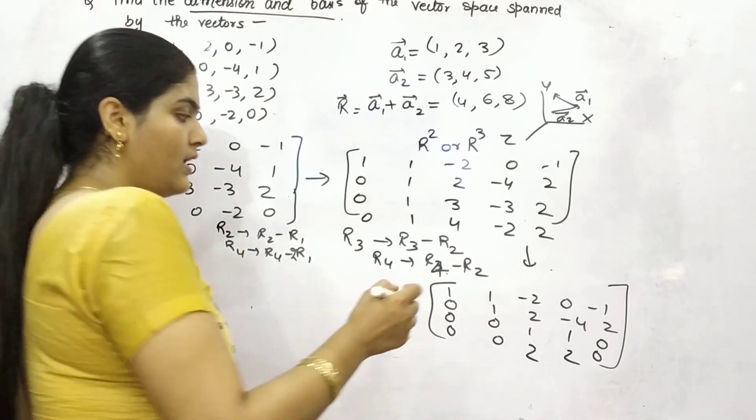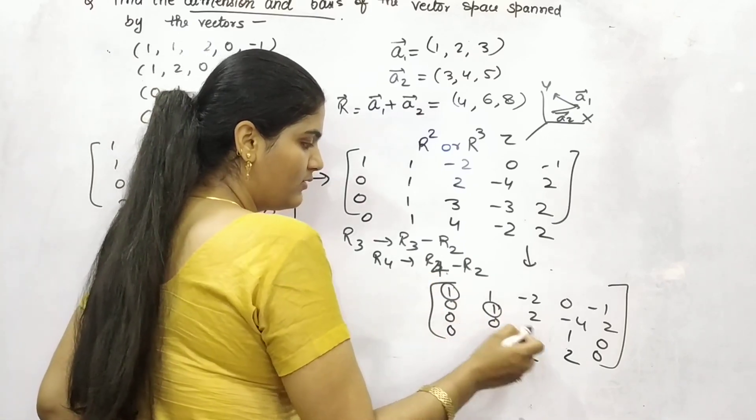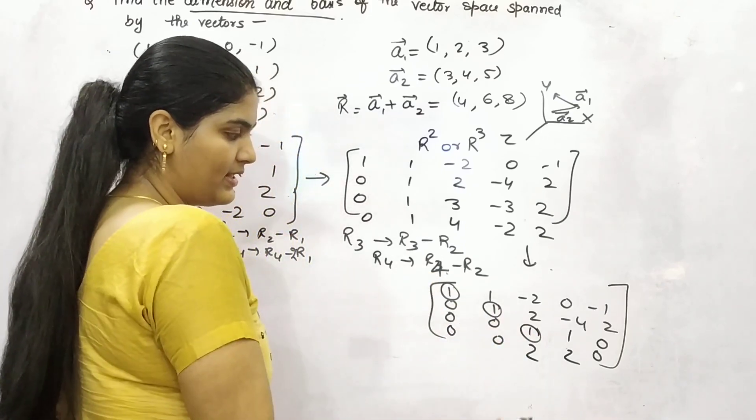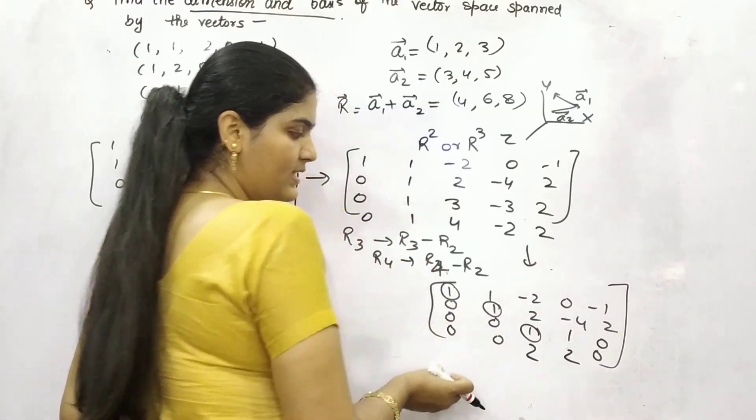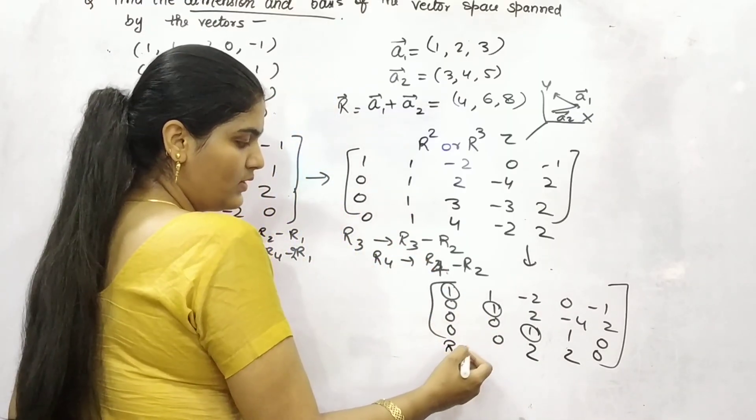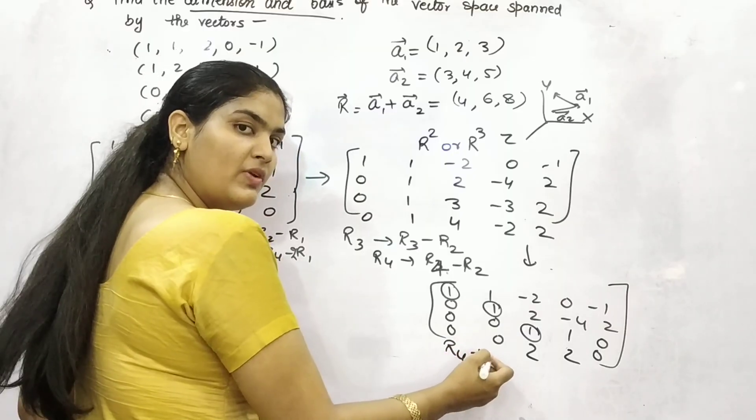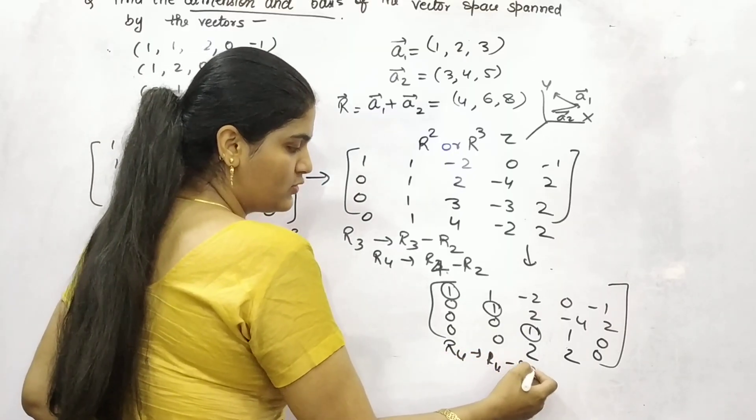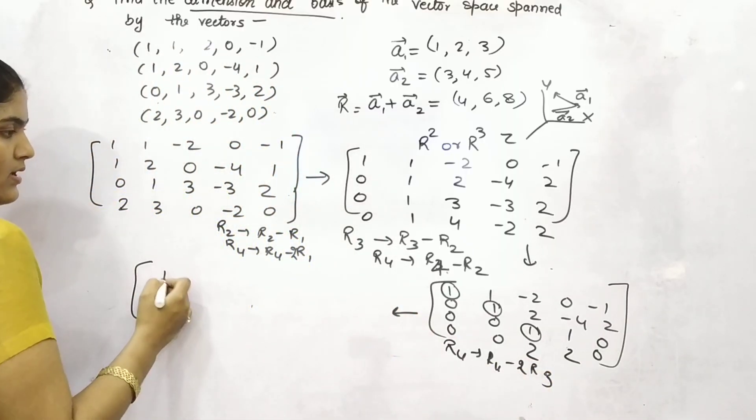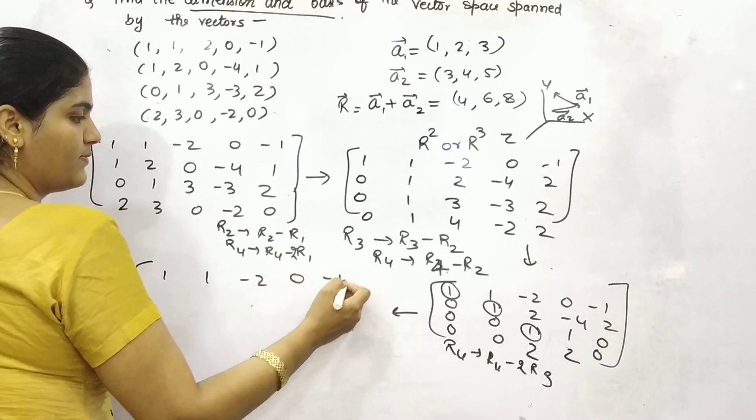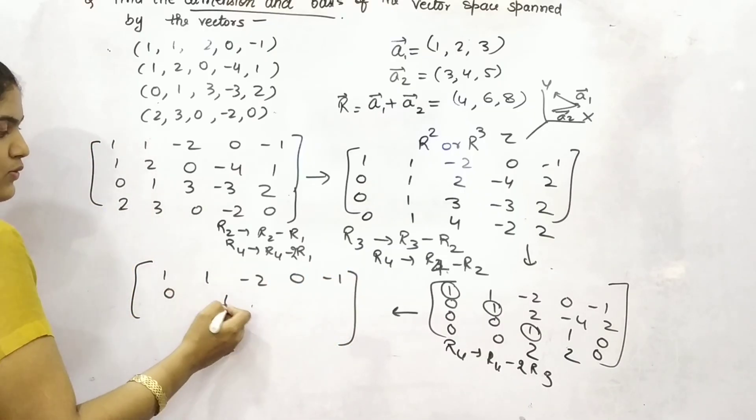Now, find out the pivot points. Pivot means 1, 1, 1, which row is having this? However, you can do one more thing. To nullify this fourth row, you can subtract R4 from twice of R3, right? Then what you will get, so first as it is, 0, 1, 2, minus 4, 2.